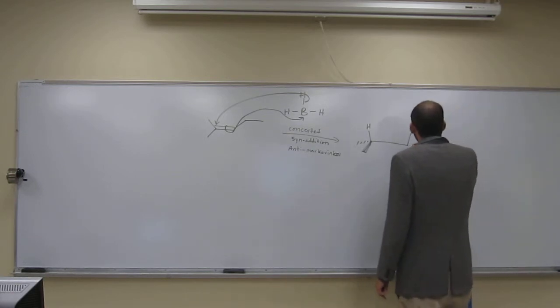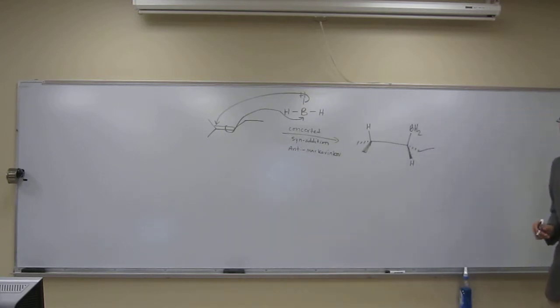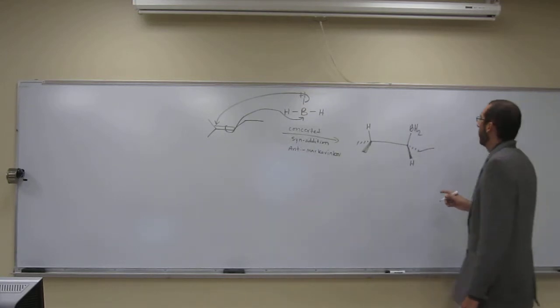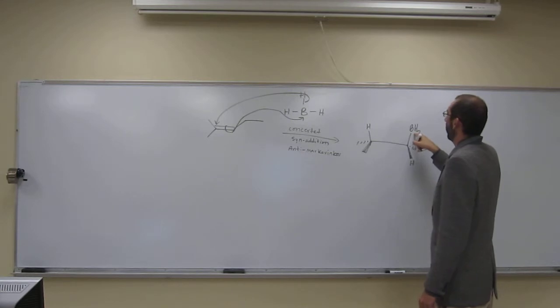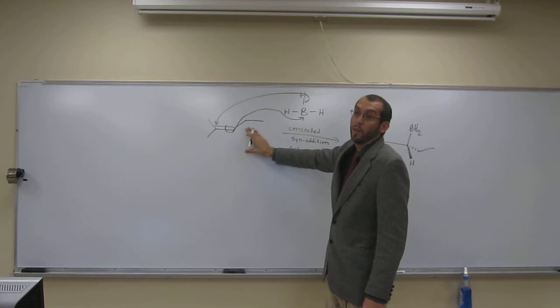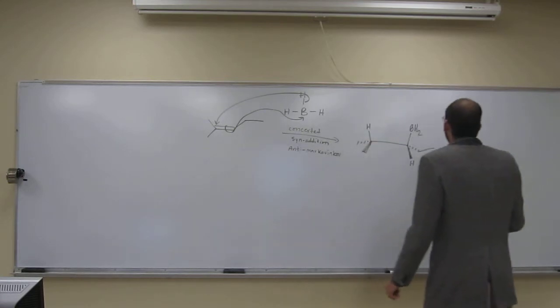So I'll just draw that extra hydrogen, like that. So what happens, this BH2 actually becomes BR2 by adding two more of these alkenes onto it.